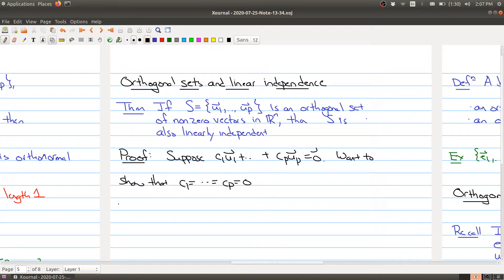Notice that for each i going from 1 to p, you can take our first equation and you can do the dot product of both sides with the vector ui. And the zero vector dotted with ui gives you a number zero right there.